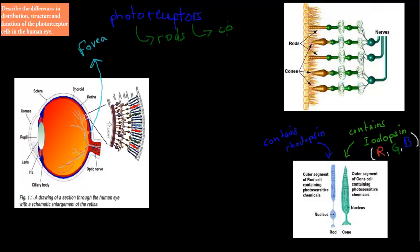What we have to talk about in terms of rods and cones is a couple of different things. We have to talk about the difference in structure — so how they look — distribution — so where we can find them — and function — so what they actually do.